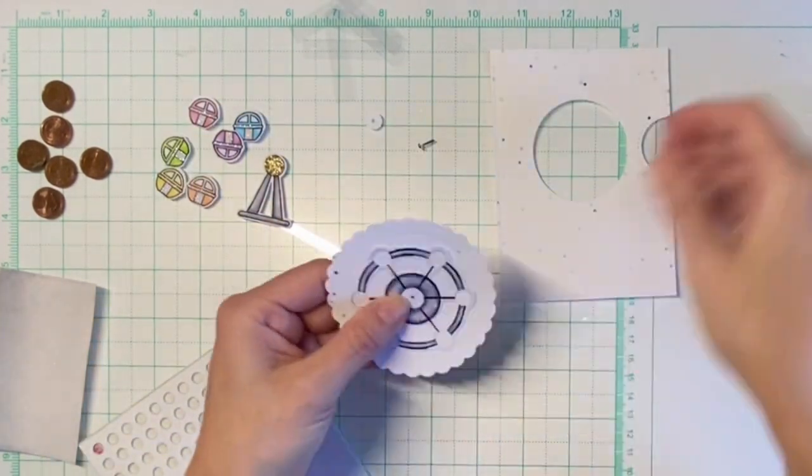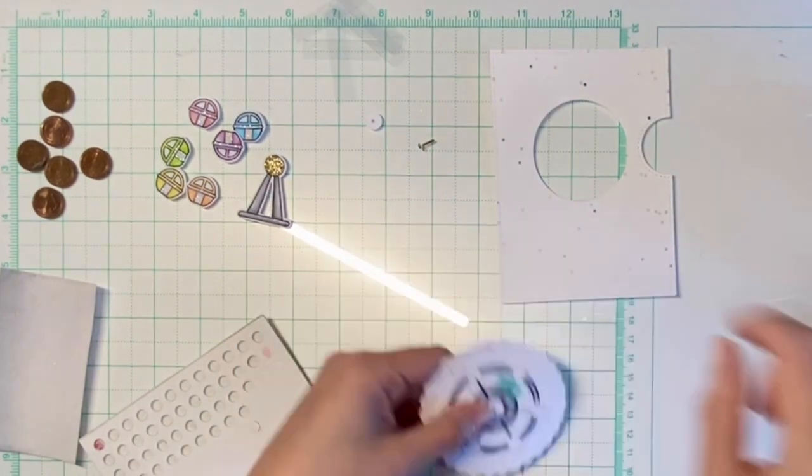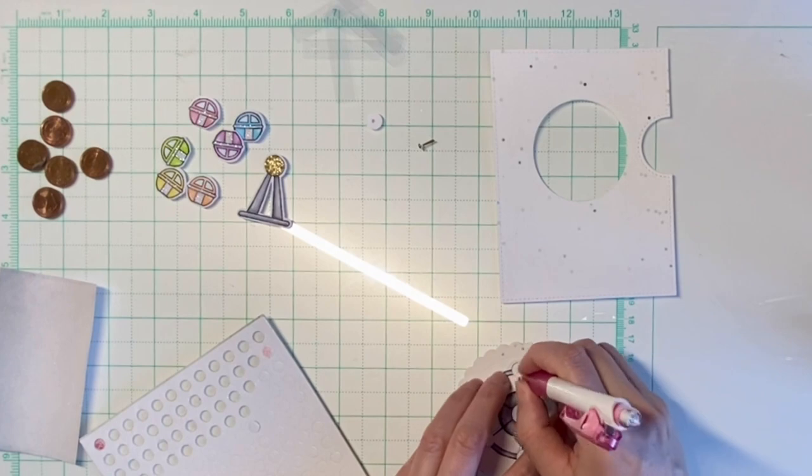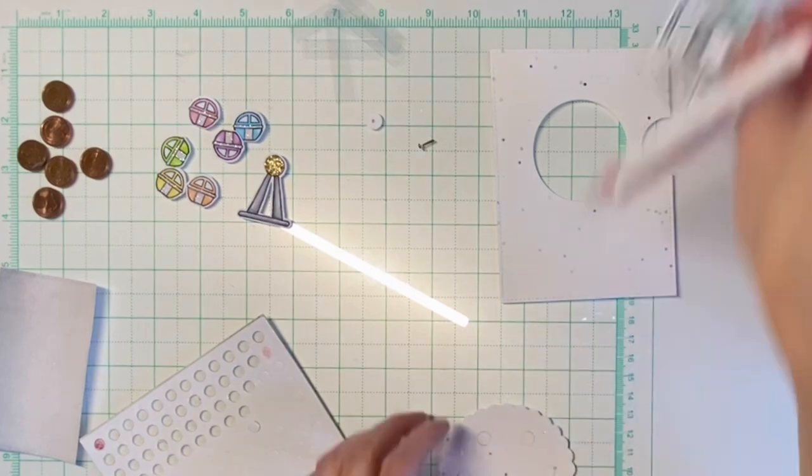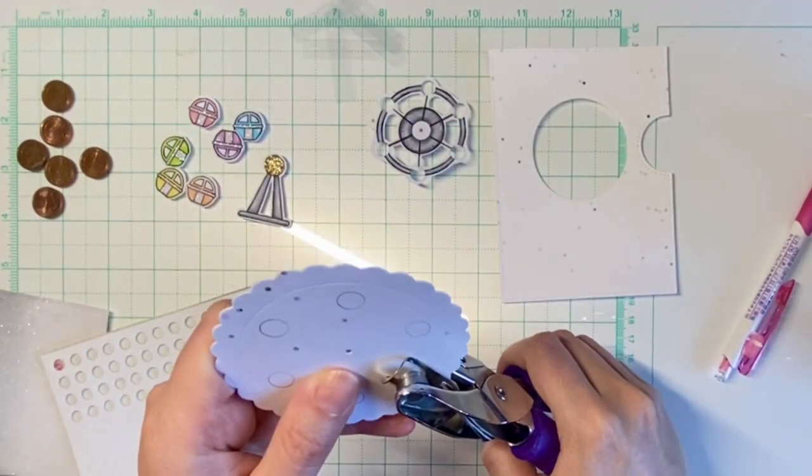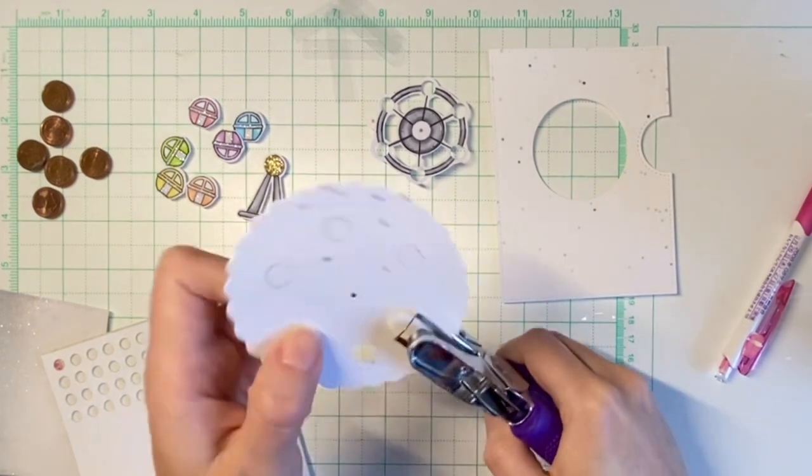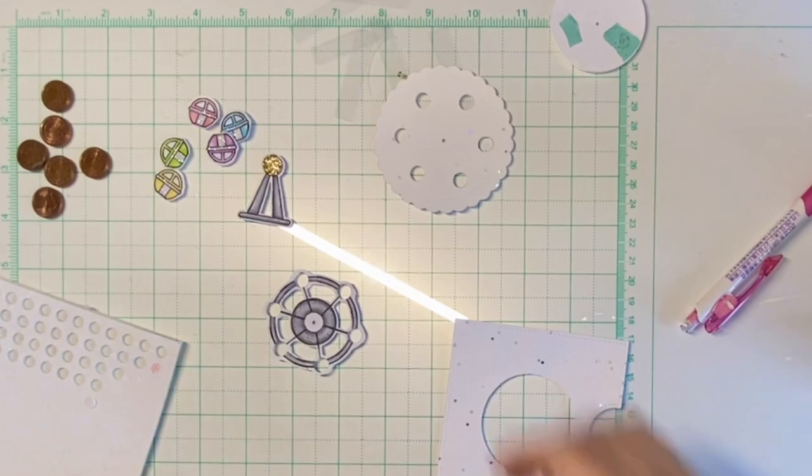The next step is to align the prepared ferris wheel with the reveal wheel and mark the openings that I've cut with my hole punch, and then use the same hole punch to cut the holes in the reveal wheel in the marked positions so it all lines up.